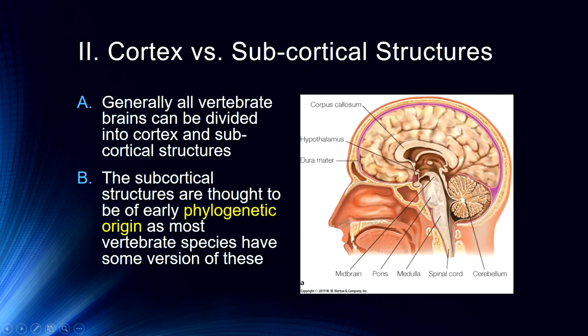Generally, all vertebrate brains are divided into cortex and subcortical structures. These subcortical structures are thought to be of early phylogenetic origin, as most vertebrate species have some version of them — certainly all mammals do, and they're pretty similar. These are parts of the brain that function outside of conscious awareness. For example, the spinal cord, medulla, pons, and midbrain — we'll get into these in the next lecture. The medulla is what keeps you breathing and your heart beating. The cerebellum and other subcortical structures are involved in motor functioning.